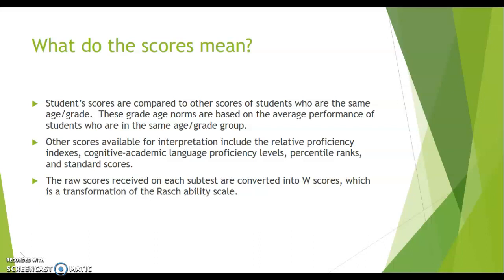The scores are available for interpretation and there's a list of them in the examiner's manual of what kind of things you can get out of the scores. So relative proficiency indexes, cognitive academic language proficiency levels, and percentile rankings and standard scores. The raw score received on each subtest are converted into W scores, which is a transformation of the Rasch ability scale.